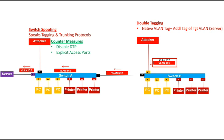This VLAN tagging attack is unidirectional, meaning the attacker can only send the packet but cannot receive a response from the server.